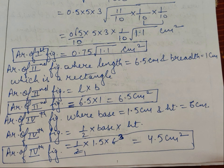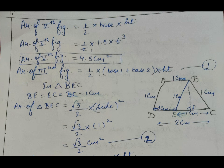Now come to figure number 4. Figure number 4 is in the shape of a right-angled triangle where base is 1.5 centimeters and height is 6 centimeters. We can find the area using the formula: half × base × height. After putting the values, the final answer is 4.5 cm².